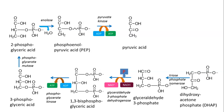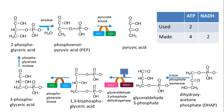In glycolysis, we break glucose — a six-carbon sugar — into two three-carbon sugars, and the end product is pyruvic acid. This material then goes through a process by which carbon dioxide is evolved, leading into the Krebs cycle. Looking at the energy balance: we used two ATPs to run the whole process and made four ATPs, for a net gain of two ATPs. We also produced two NADHs, which will go into the electron transport system where many more ATPs will be created.